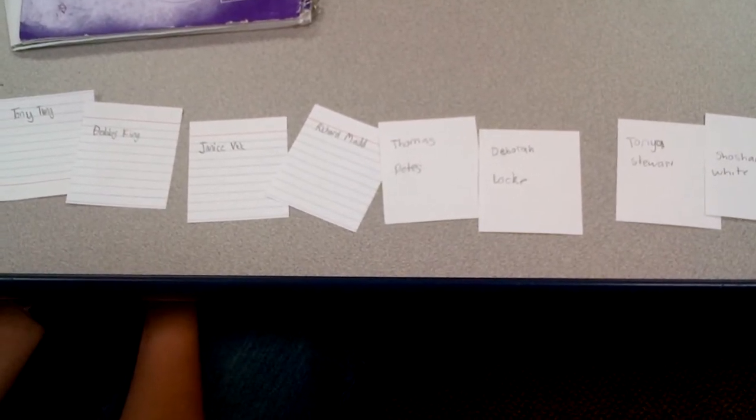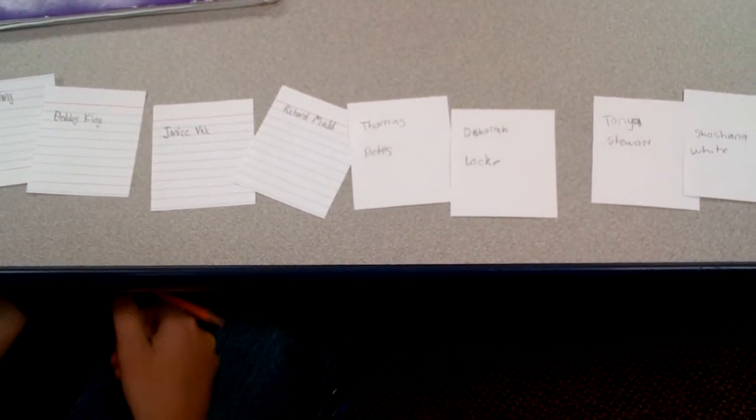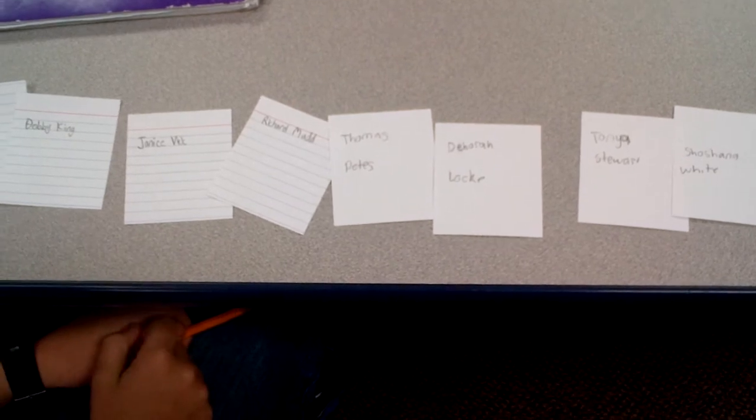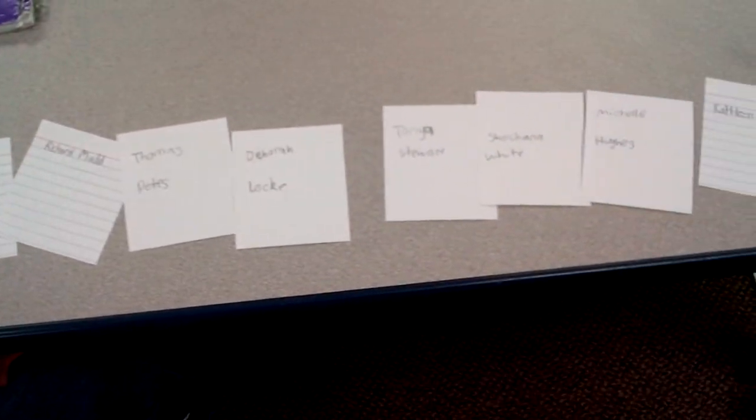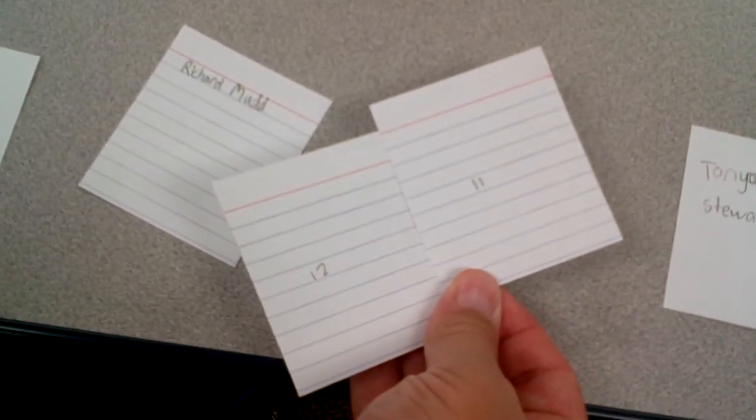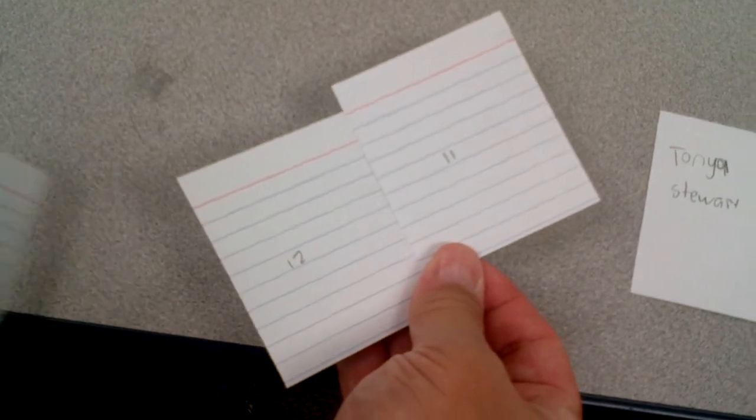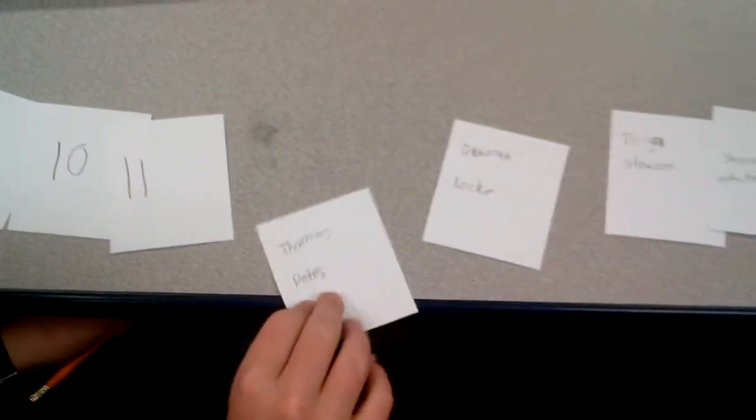So here is Dylan and Austin S. demonstrating how to remove two names from this list so that the median increases. And right now, the median is 11 and a half. Okay, go ahead guys, show me how you would do that.